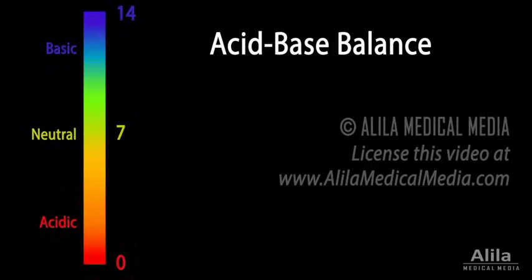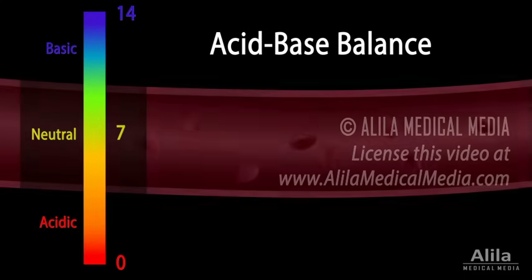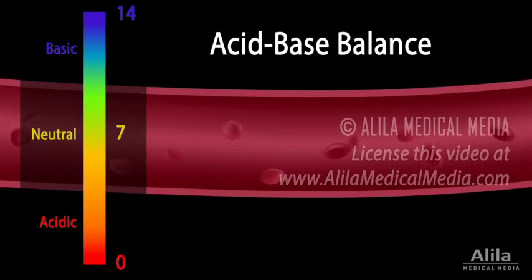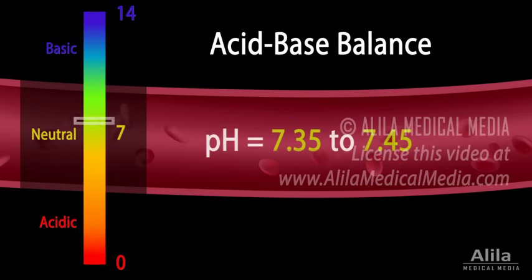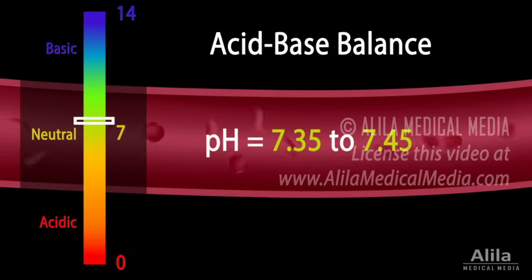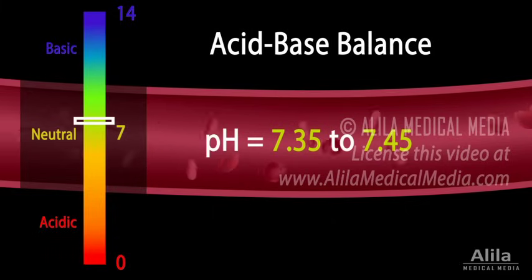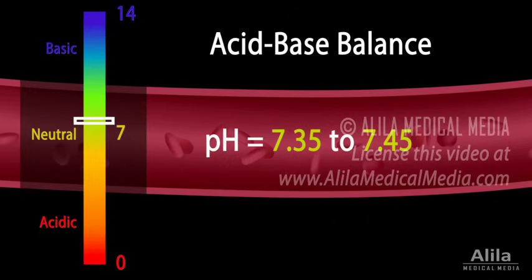pH is an indicator of acidity. The body's blood pH is strictly regulated within a narrow range between 7.35 and 7.45. This is because even a minor change in acidity may have devastating effects on protein stability and biochemical processes.